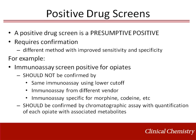A positive drug screen is a presumptive positive and may require confirmation using a different methodology with improved specificity and sensitivity. For example, a positive immunoassay screen for opiates should not be confirmed by the same immunoassay using a lower cutoff, by an immunoassay from a different vendor, or by an immunoassay specific for an opiate. It should be confirmed by a chromatographic method that provides quantification of each opiate and associated metabolite.